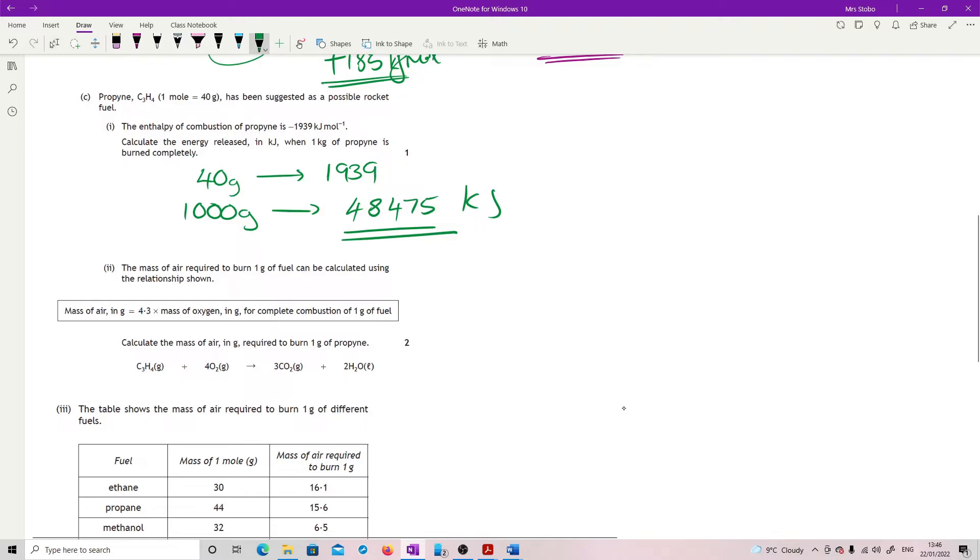The mass of air required to burn one gram of fuel can be calculated using a relationship. Mass of air in grams equals 4.3 times the mass of oxygen in grams needed for complete combustion in one gram of fuel. Calculate the mass of air in grams required to burn one gram of propine. Right, so you're given the equation which you're going to need. So what we know is that C3H4 to oxygen is a 1 to 4. So that means for every one mole of this, which you were told up the top here, one mole weighs 40 grams, we actually need four moles of oxygen. So four times 32, so that is 128. It's the mass of oxygen that we need. So one gram, one divided by 40 times by 128 means that for every one gram of propine, I need 3.2 grams of oxygen.